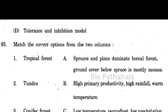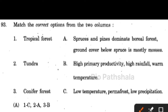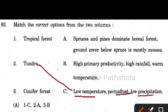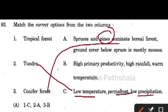Next question: match the correct option from the two columns — tropical forest, tundra, and conifer forest. Tundra is characterized by low temperature and low precipitation. Conifer forest has pines, and tropical forest has high productivity, high rainfall, and warm temperature. So option 1 matches B, option 2 matches C, and option 3 matches A.